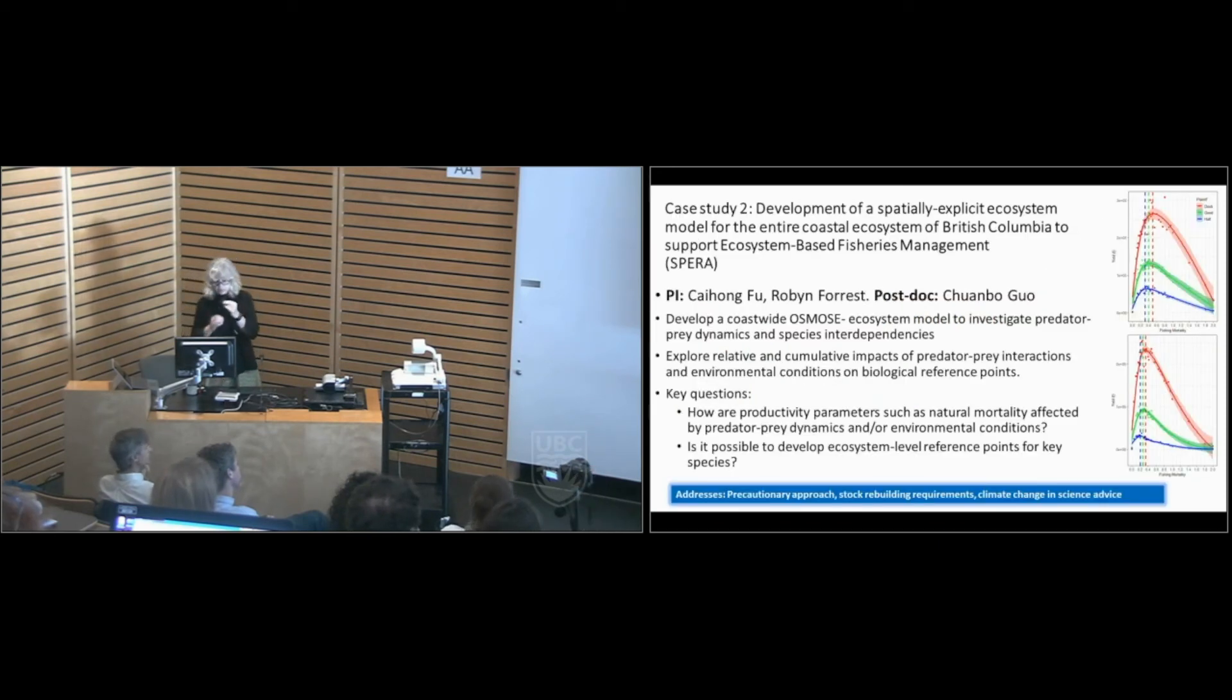So, quickly on to the second case study. This one is a much more traditional, as you would think about, ecosystem project. This is led by Xinhua Fu, who I work with, and we have a postdoc, Huanbo Guo. He's developing an Ecopath with Ecosim model of the west coast of Vancouver Island and the rest of the BC coast. He's interested in the impact of ecosystem considerations and climate change on fishery reference points, among other things, and the implications on this for fishing strategies and recovery. So, these little graphs on the side there are some preliminary, extremely preliminary yield curves showing F-MSY and the dotted lines under three different oceanic productivity scenarios. So, this one's trying to speak to the precautionary approach in an ecosystem sense, stock rebuilding requirements, and climate change in science advice, which is on the list that Neil showed you.